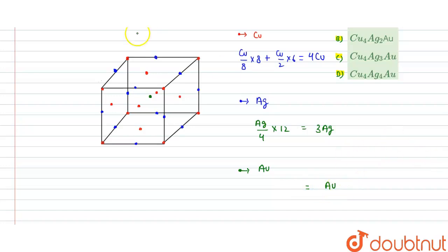So the formula is - we write the formula equals what? Cu4 Ag3 Au. This is the formula.